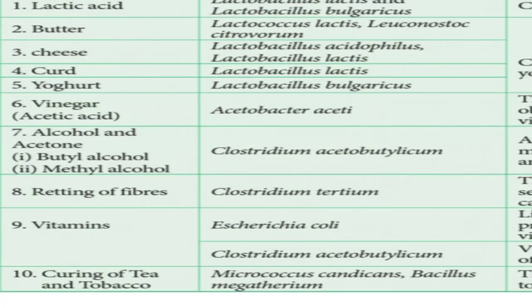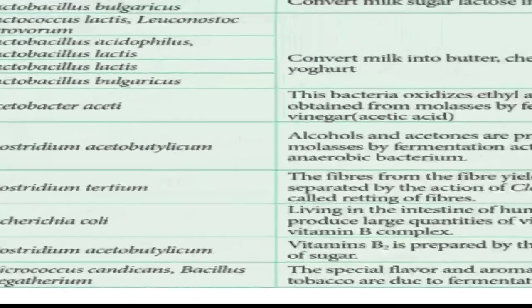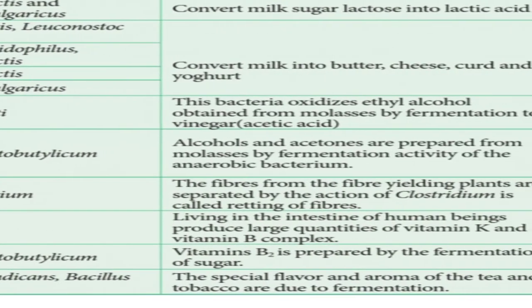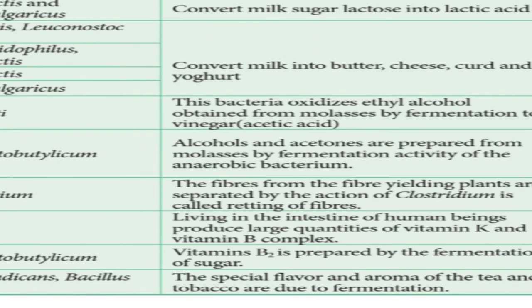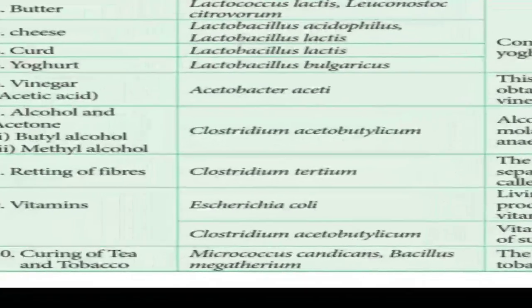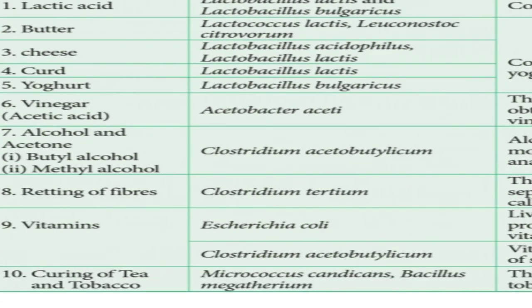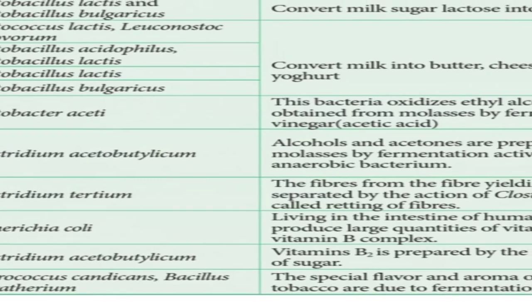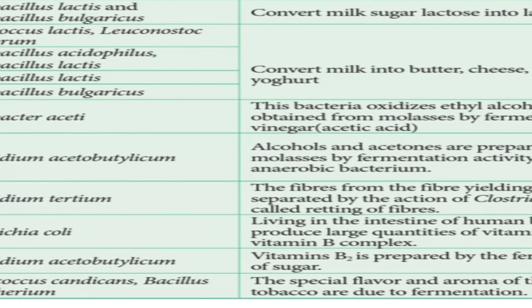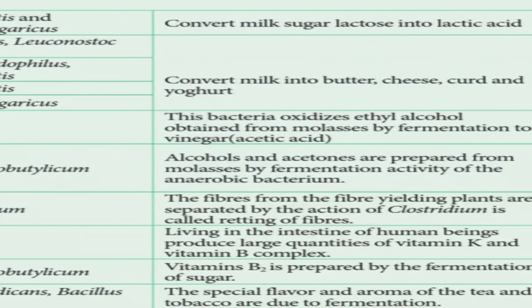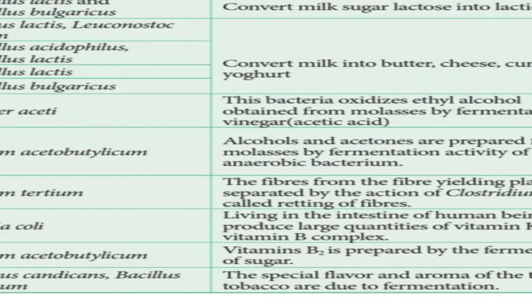Alcohols and acetone: butyl alcohol and methyl alcohol are taken from Clostridium acetobutylicum. The alcohol and acetones are prepared from molasses by fermentation due to the presence of this anaerobic bacterium. Retting of fibers: the fibers from fiber-yielding plants are separated with the help of the bacterium Clostridium tertium. This process is called retting of fibers.